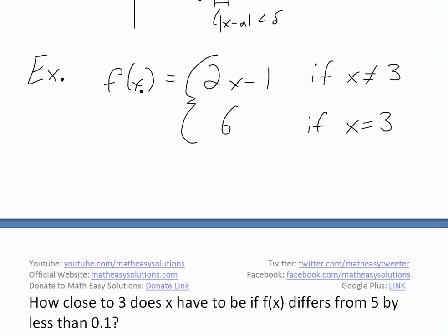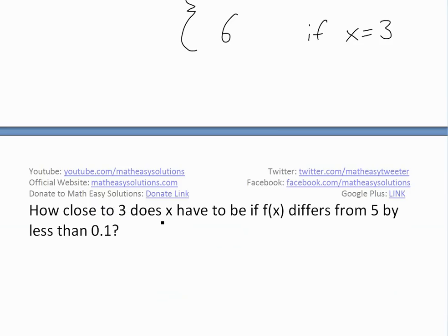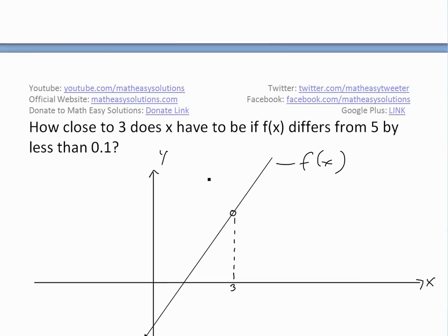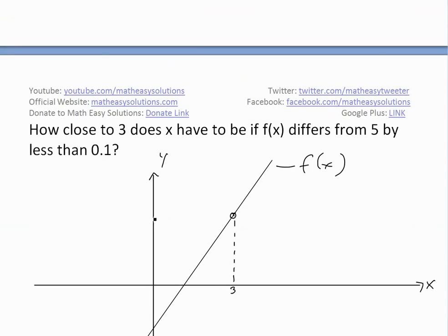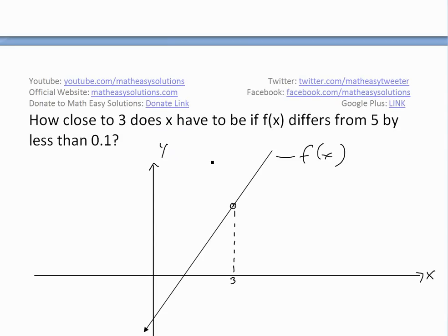To illustrate the precise definition, here's an example. Let f of x equal 2x minus 1 if x is not equal to 3, and equal 6 if x equals 3. The question is: how close to 3 does x have to be if f of x differs from 5 by less than 0.1? Graphing this, we get a line with an open circle at x equals 3, because plugging in: 2 times 3 minus 1 equals 5, so the limit approaches 5, but f(3) = 6.